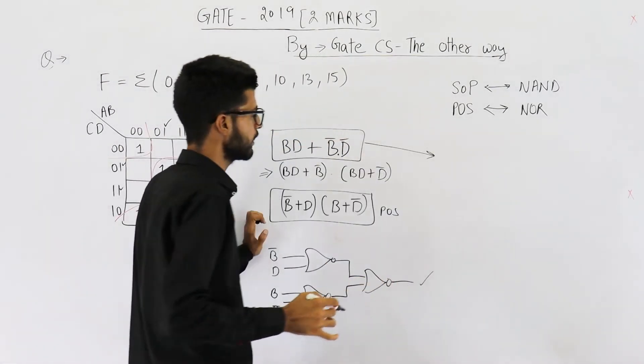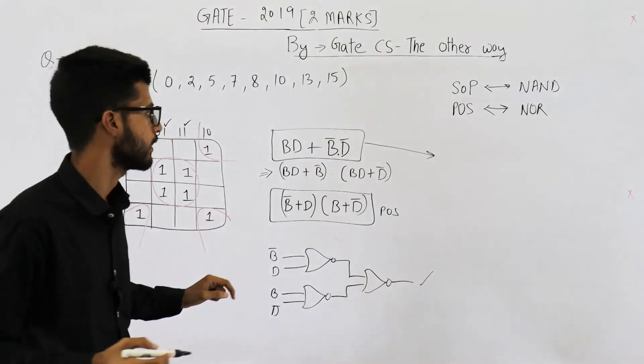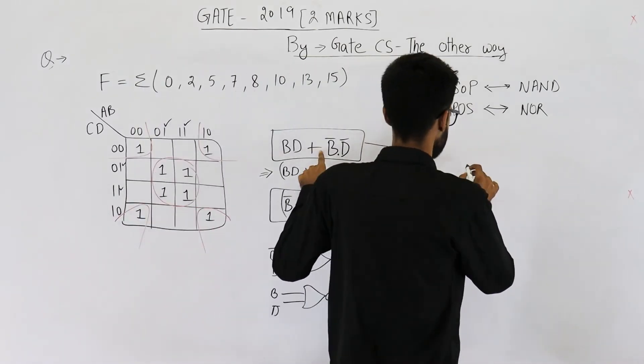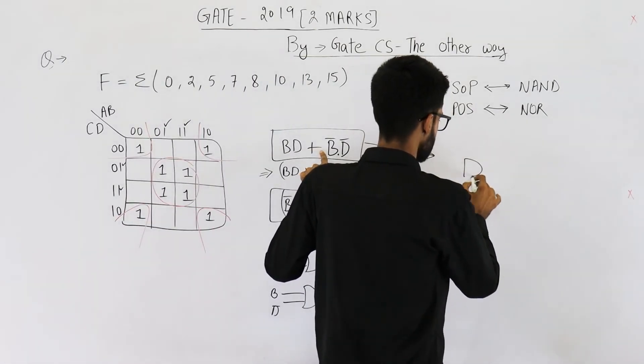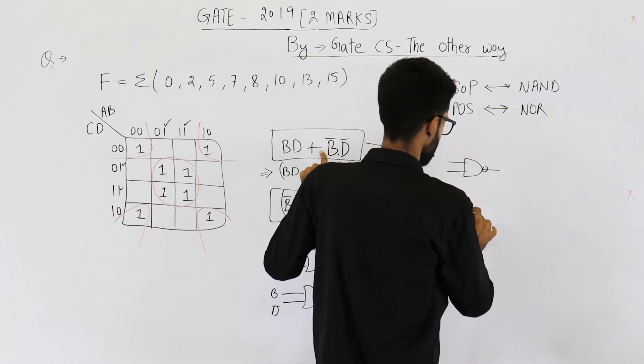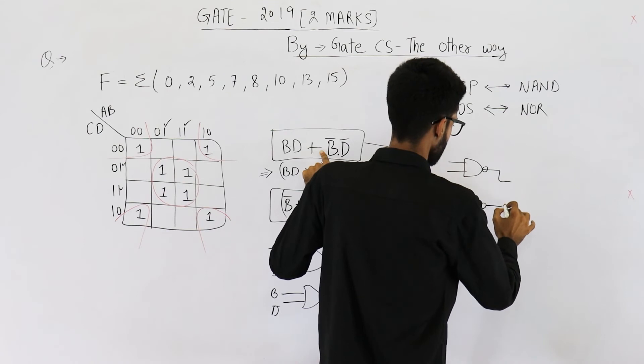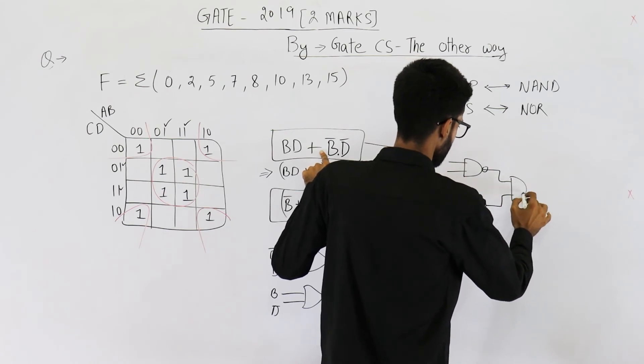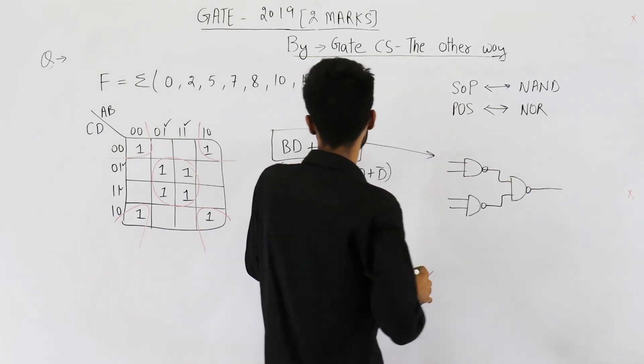So implementing this function using NAND gates, you will use the SOP form. So NAND gates will be this.